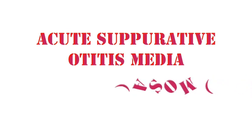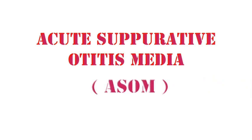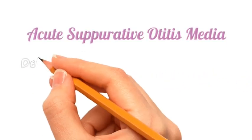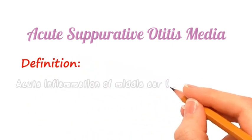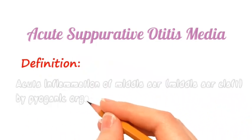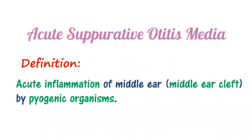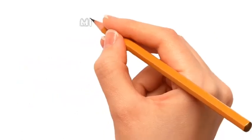Hello friends. In this video we shall learn about Acute Suppurative Otitis Media. Acute Suppurative Otitis Media is defined as the acute inflammation of the middle ear cleft by pyogenic organisms.